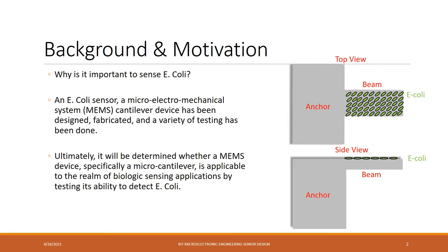E. coli is a bacteria found in the guts of animals. Every year about 270,000 people are infected with E. coli and it results in around 100 deaths. Recently, 5,000 pounds of beef was recalled after it was discovered to be infected with E. coli. Typical lab tests for E. coli include sample incubation and analysis, which can take anywhere from 24 to 48 hours.